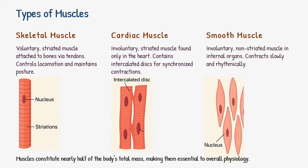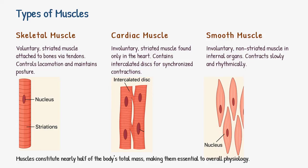Let's begin with the types of muscles. First, skeletal muscle — the voluntary, striated muscle that attaches to your bones and enables movement. Cardiac muscle is also striated but involuntary and exclusive to the heart; its intercalated discs allow it to contract rhythmically. Finally, smooth muscle is involuntary and non-striated, found in the walls of internal organs like the intestines and blood vessels. It contracts slowly and steadily, supporting vital internal functions.